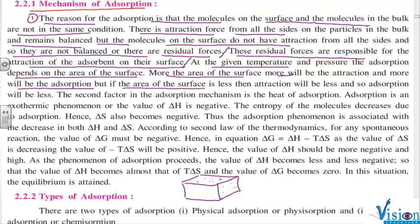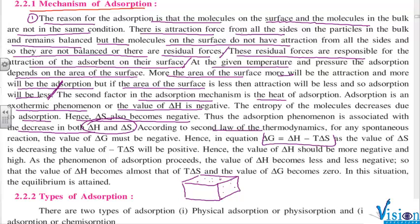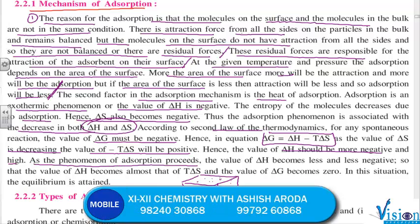The second factor in the adsorption mechanism is the heat of adsorption. Adsorption is an exothermic phenomenon, so the value of delta H is negative. The entropy of the molecules decreases due to adsorption, hence delta S is also negative. Thus, the adsorption phenomenon is associated with a decrease in both delta H and delta S. According to the second law of thermodynamics, for a phenomenon to be spontaneous, we need delta G to be negative. Since delta S is decreasing, the value of minus T delta S will be positive. Hence, the value of delta H must be sufficiently negative so that the phenomenon of adsorption proceeds.